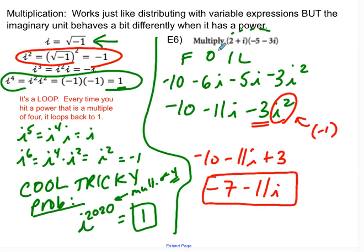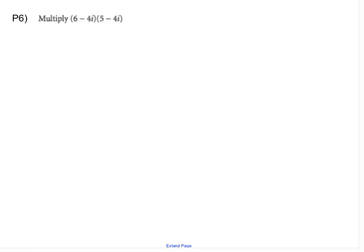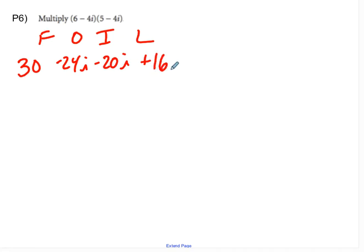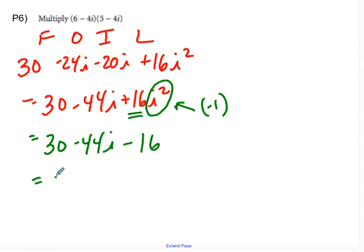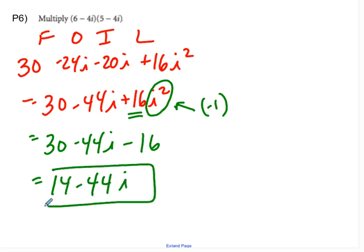So the first skill is exactly the same. You're foiling just like you would if these were polynomials. What's different is that when you get a power of i, you have to replace it with what it's equivalent to. Alright, we'll go ahead and try p6. You can pause me if you want. So I'm going to foil. So first is going to be 30. Outer is going to be negative 24i. Inner is going to be minus 20i. And last is going to be plus 16i squared. So I get 30 minus 44i plus 16i squared. And that would be the end of it if these were x's, but they're not x's, they're i's. So remember that i squared is actually negative 1. So this is 30 minus 44i minus 16, because it's 16 times negative 1. So I'm going to get 14 minus 44i. There's my a plus bi form.